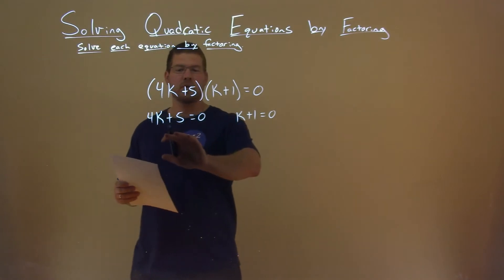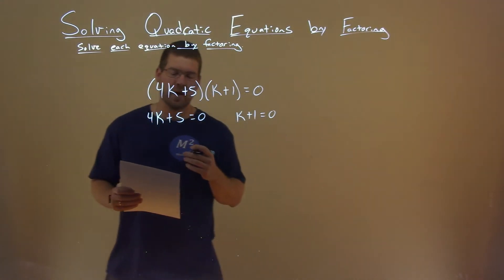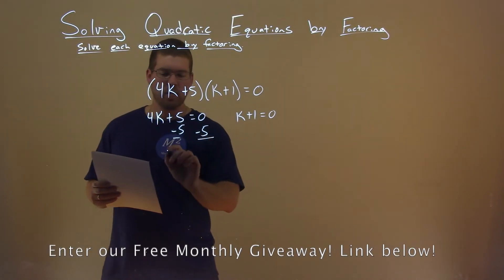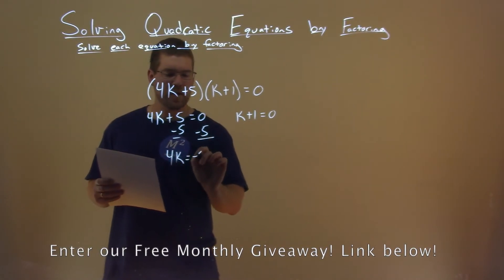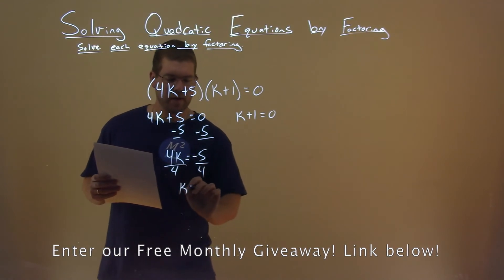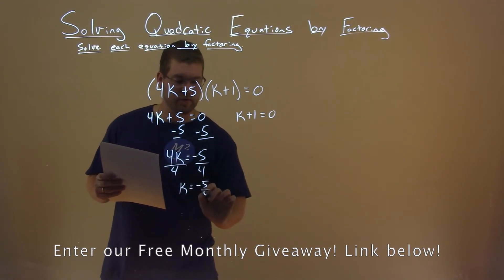And now we're going to solve both of these for our variable k. We subtract 5 from both sides. We have 4k here is equal to negative 5. Divide by 4, and k equals negative 5 fourths.